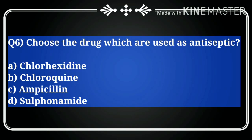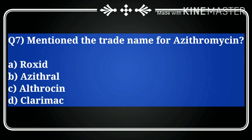Question number six: choose the drug which is used as an antiseptic. Options are: A) chlorhexidine, B) chloroquine, C) ampicillin, D) sulfonamide. Our correct answer is A, chlorhexidine. Chloroquine is an antimalarial drug, ampicillin is an antibiotic, and sulfonamide is a sulfa drug for various infections. Chlorhexidine is the antiseptic agent, so option A is correct.